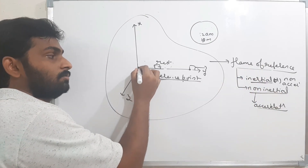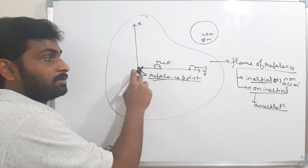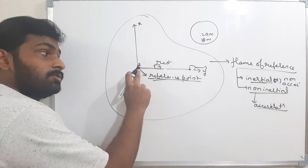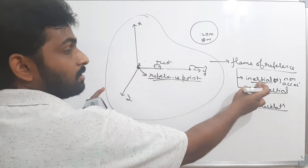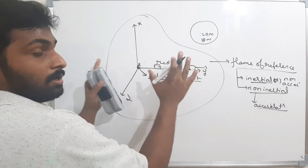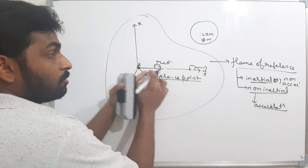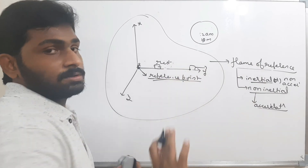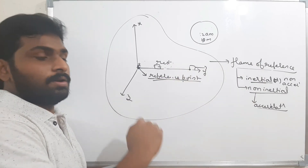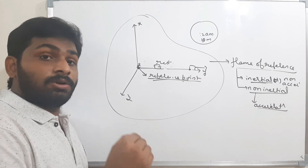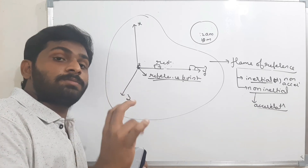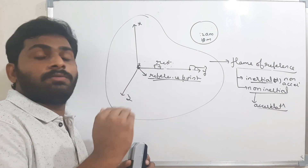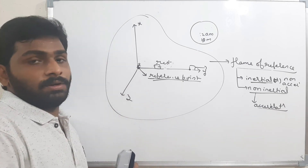The observer is always assumed to be at the origin. When the person is at rest, the frame of reference is at rest — it is an inertial frame. When the person is moving, the origin is also moving, so the whole coordinate system is moving — that is a non-inertial frame of reference. These are the basics we need before entering the chapter. In the next video we will start the actual topics: distance, displacement, speed, and velocity. If you have any doubts from Class 11 or 12, please mention them in my email and they will be clarified within 24 hours. Thank you.